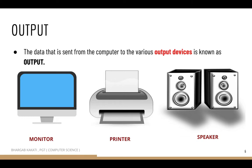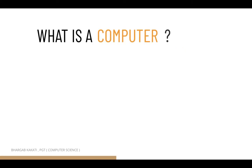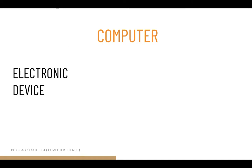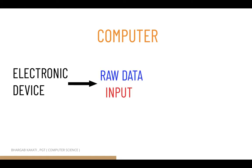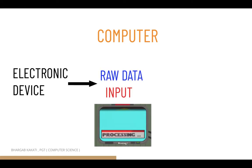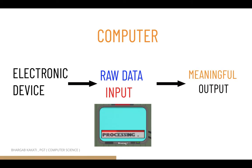Now the definition of a computer should be clear. A computer is an electronic device that takes raw data as input, processes it, and after processing converts it into a meaningful output.